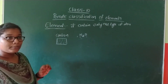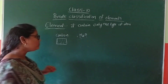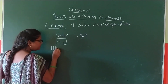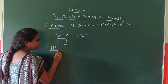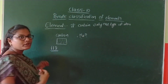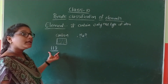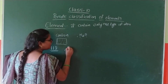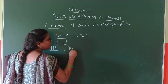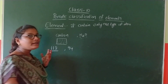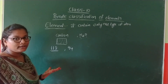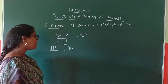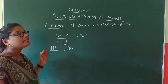In the entire periodic table, we have 118 elements. We know 118 elements. In these 118 elements, 94 elements are naturally occurring elements.